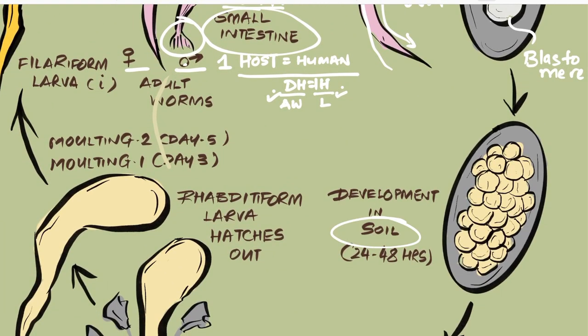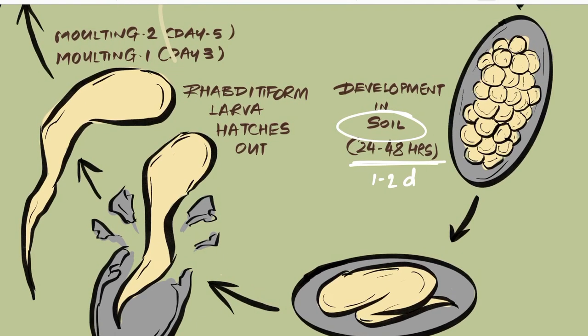This egg, when released in feces, will undergo development in the soil. Within 24 to 48 hours — approximately one to two days — the blastomeres will divide further to develop a larva, specifically a rhabditiform larva. The egg containing this larva is then known as an embryonated egg.